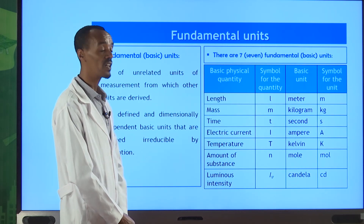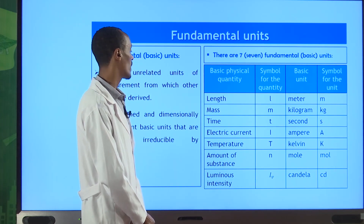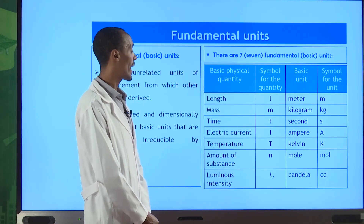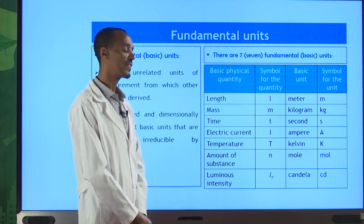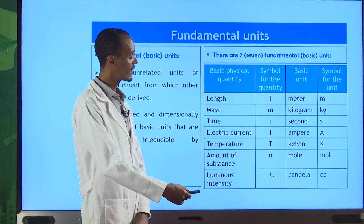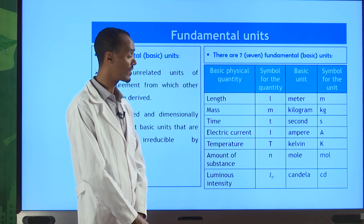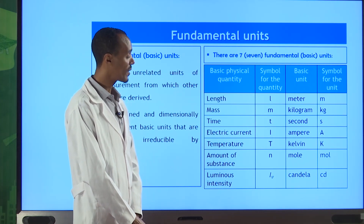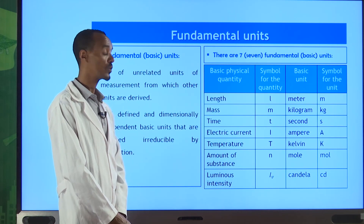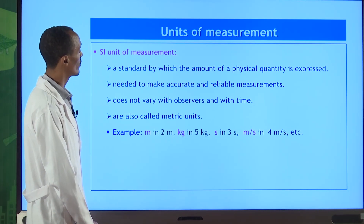When writing units, for example the electric current unit 'ampere' — if writing the full word, the first letter should be small 'a', because a capital A followed by the full word 'Ampere' represents the scientist, not the unit. The same applies to kelvin. These are technical points we should be aware of when writing SI units.